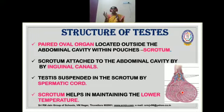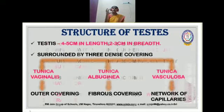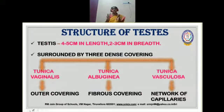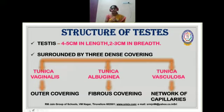The scrotum helps in maintaining the lower temperature for the effective production of sperms. Now in this video, we are going to see about the structure of the testis. Structurally, the testis is an oval, paired organ — two in number — and the size is 4.5 centimeters in length and 2 to 3 centimeters in breadth.